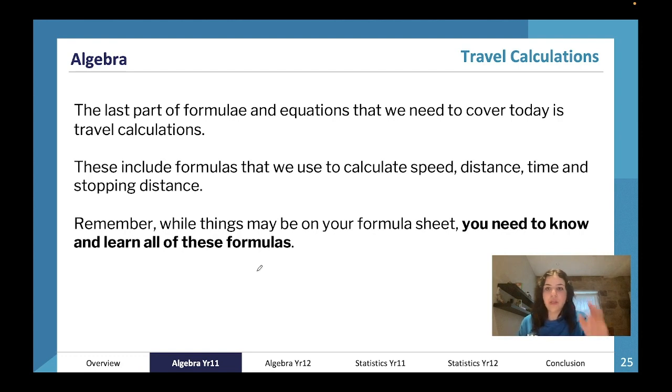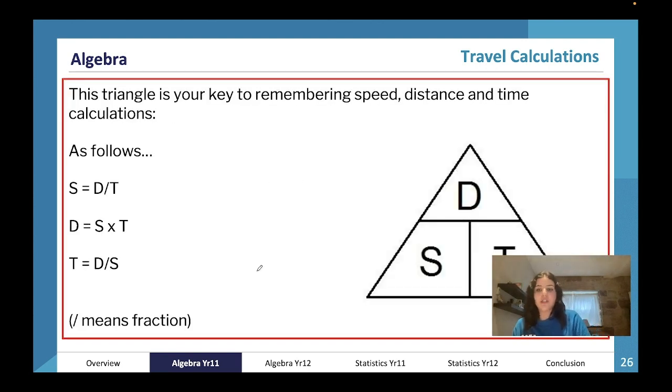The last part of formulae and equations from year 11 that we're going to cover today is travel calculations. So this is our whole speed, distance, time, stopping distance. Now all of these things may be on your formula sheet - let me have a look - they're really not. They might be on your formula sheet for certain things in your internal exams, but they're not going to be on this final formula sheet, so you do need to know them. So this triangle - anytime you see a red rectangle, it's very important. This triangle is your key to remembering speed, distance, and time calculations. So it goes as follows: anything up here is representing a fraction, this is representing a times. So speed is going to be distance divided by time, distance is going to be speed times time, and time is going to be distance divided by speed. Very important. I'm going to give you guys a second to screenshot that.